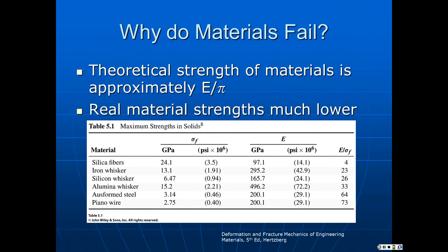The first question is: why do materials fail? We can do some theoretical calculations, and from those it can be shown that the strength of a material ought to be approximately the modulus divided by pi. It turns out real materials are nowhere close to that. The best form of materials we can make — the strongest versions of a given material — are going to be fibers. Even in silica fibers, which are about the best material it's possible to make, the actual modulus-to-failure-stress ratio is 4, not 3.14159. So we're close, but we're still not at the theoretical level. The strength is going to be less than the theoretical value.